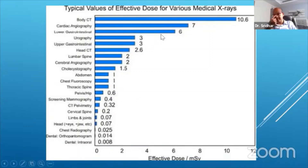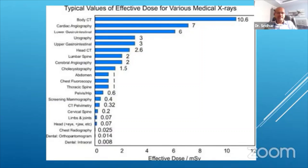This is because the gastrographin and so on increases the radiation load, and the number of x-rays repeated with that increased setting as well. So don't take a GA contrast study lightly.